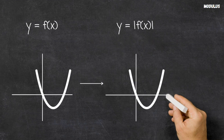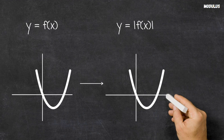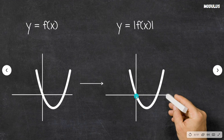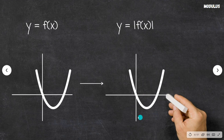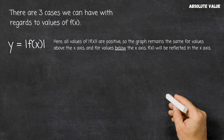Here on the left we have an example of what f of x might look like — some quadratic function. How does this change if we apply the modulus function? It will flip the negative portion of the graph and reflect it in the x-axis, effectively taking that section of the graph and flipping it upwards, so we don't have any negative values of f of x for the modulus of f of x.